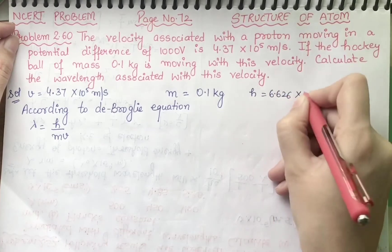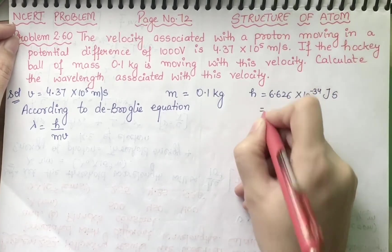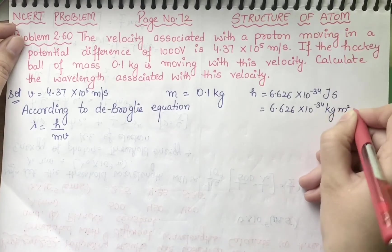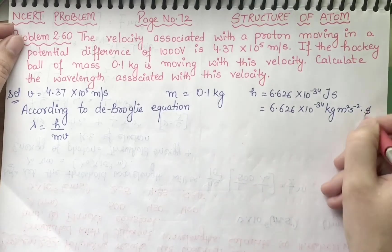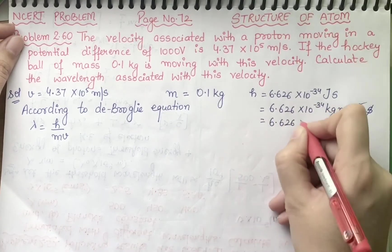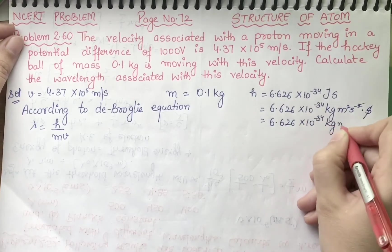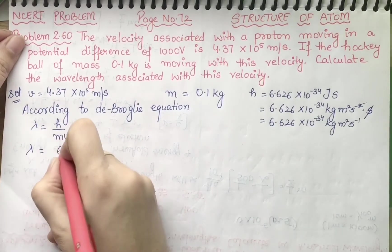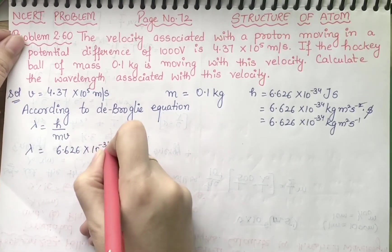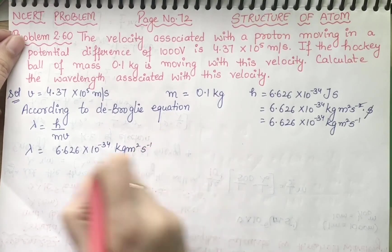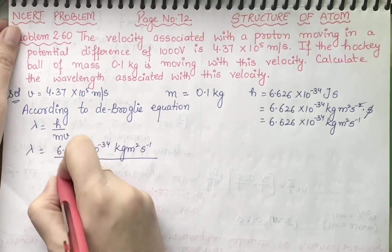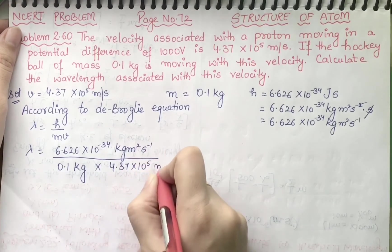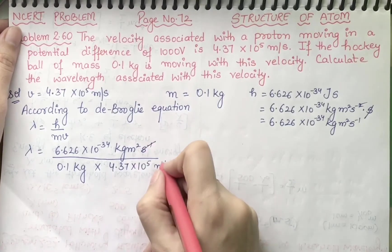Joule can be converted: 6.626 into 10 raise to power minus 34 kg meter square second inverse square into second. This second cancels, so the final value is 6.626 into 10 raise to power minus 34 kg meter square second inverse. Now putting values: lambda equals 6.626 into 10 raise to power minus 34 divided by mass 0.1 kg into 4.37 into 10 raise to power 5 meter per second. Second inverse cancels, meter cancels.